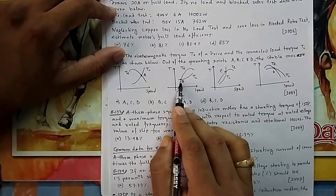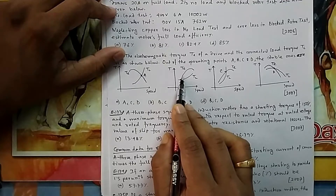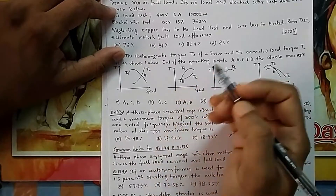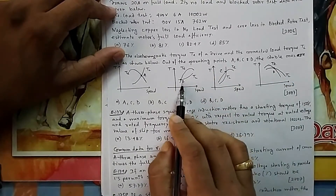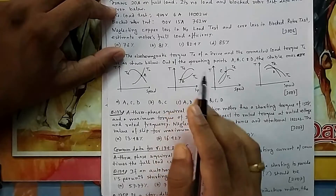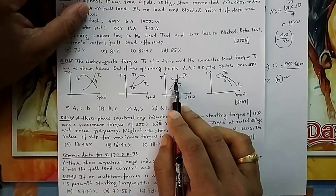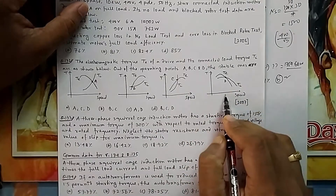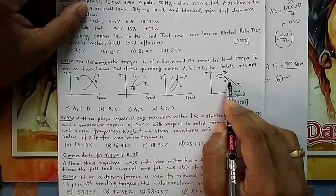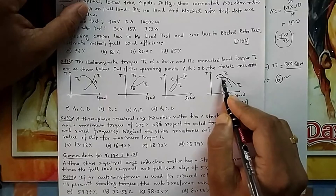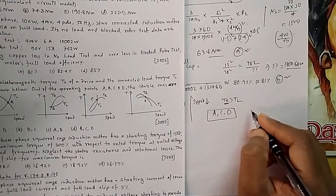For point B: if speed increases beyond B, TE is greater than TL, so speed keeps increasing — it will not return. B is unstable. For point C: beyond that speed, TE is less than TL, bringing it back to C — stable. For point D: similarly, if speed goes beyond D, TL is more and TE is less, restoring the original position. So the stable operating points are A, C, D — that is option A.